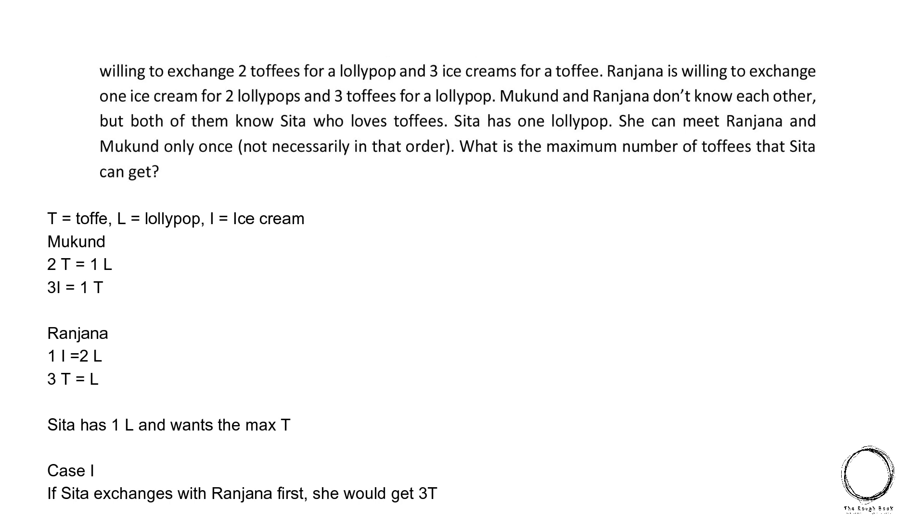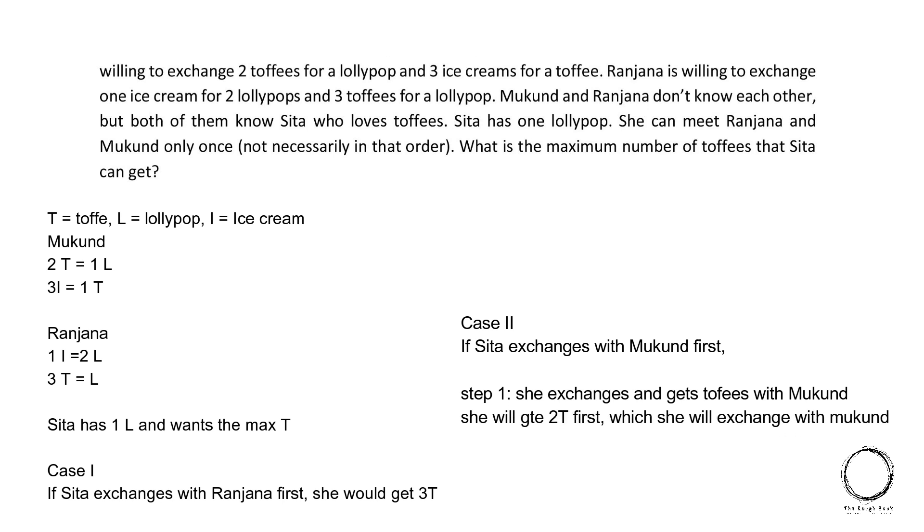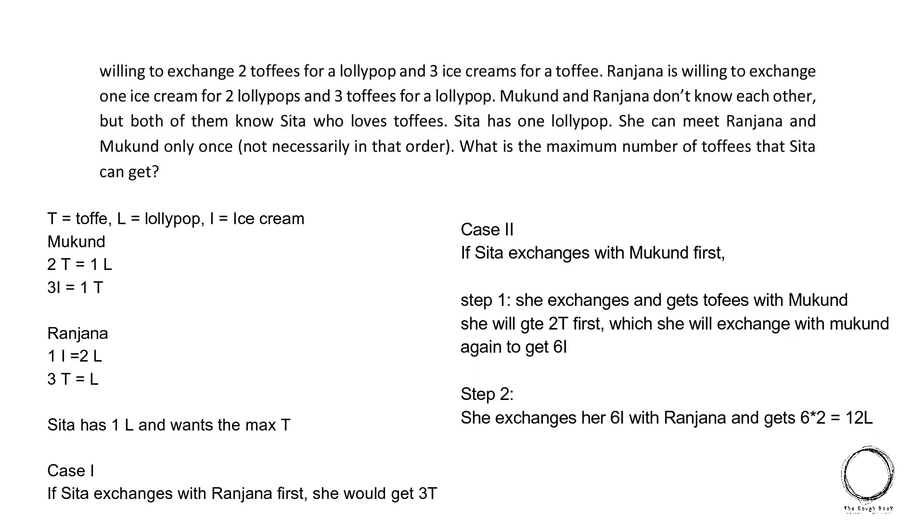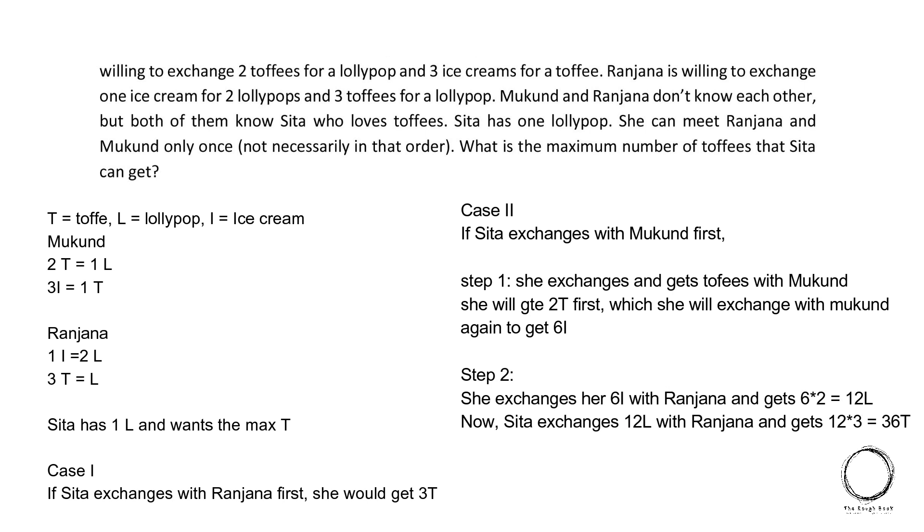So in first case, if Sita exchanges with Ranjana first, she would get 3 toffees. In second case, if Sita exchanges with Mukund first, step 1, she exchanges and gets toffees with Mukund. She will get 2 toffees first which she will exchange with Mukund again to get 6 ice creams. Step 2, she exchanges her 6 ice cream with Ranjana and gets 6 into 2 which equals to 12 lollipops. Now Sita exchanges 12 lollipops with Ranjana and gets 12 into 3, that is 36 toffees. So the right answer is 36. Here you can pause the video and go through it again and solve it for yourself.